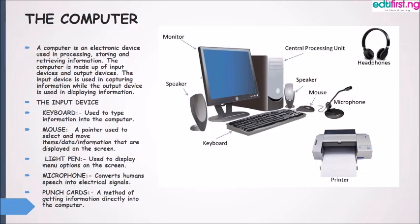What is a computer? A computer is an electronic device used in processing, storing and retrieving information. The computer is made up of input devices and output devices. The input device is used in capturing information, while the output device is used in displaying information. Examples of input devices include the keyboard, which is used to type information into the computer, and the mouse, which is a pointer used to select and move items.